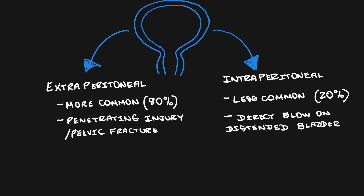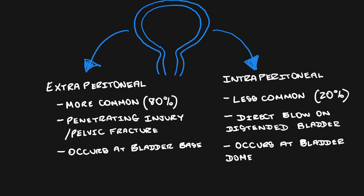Extraperitoneal ruptures tend to be due to penetrating injuries and usually involve pelvic fractures. Intraperitoneal ruptures are usually due to direct blows on a distended bladder. Extraperitoneal ruptures usually occur at the bladder base, and that's because usually there are pelvic fractures associated with this, which penetrate from under or inferior to the bladder.